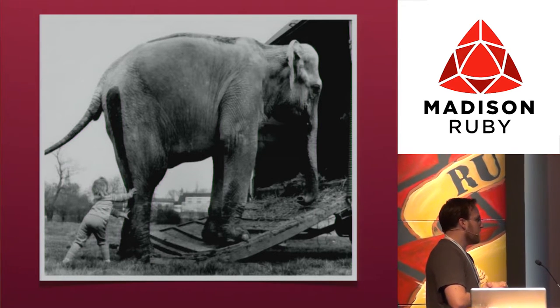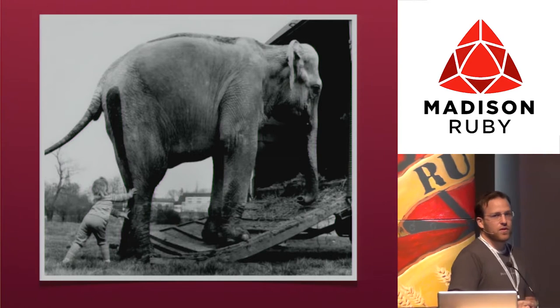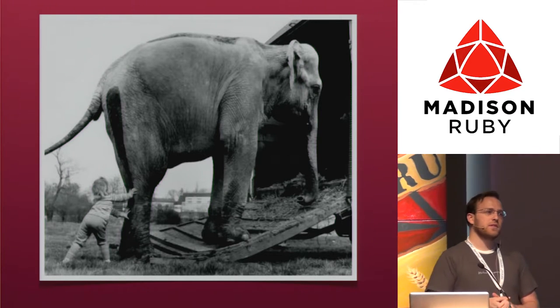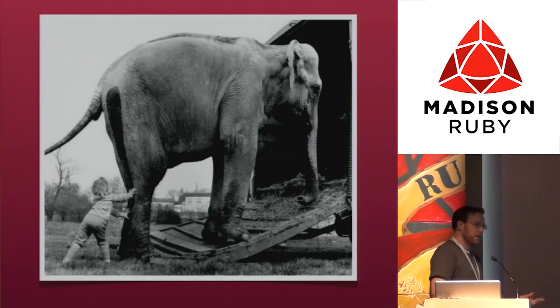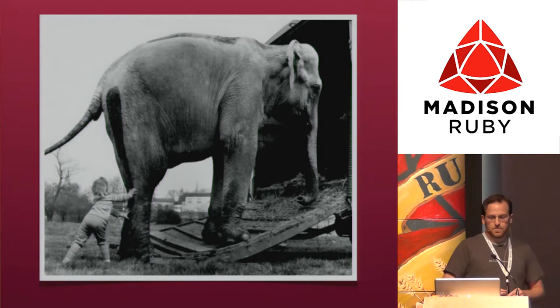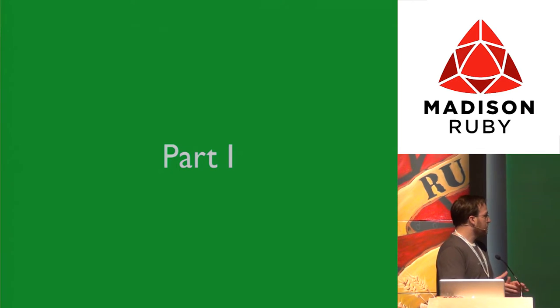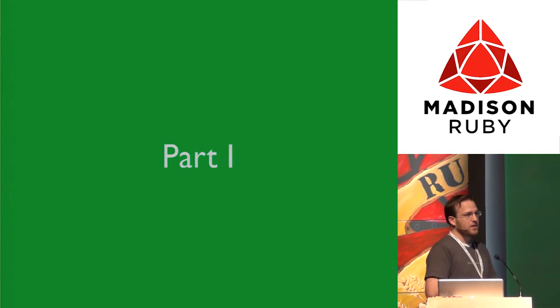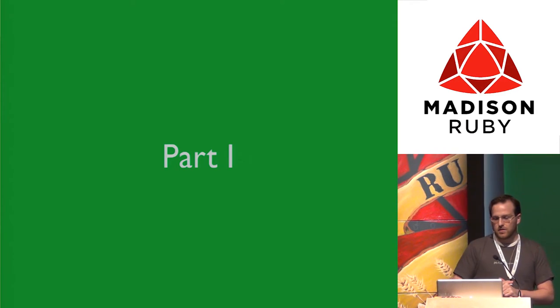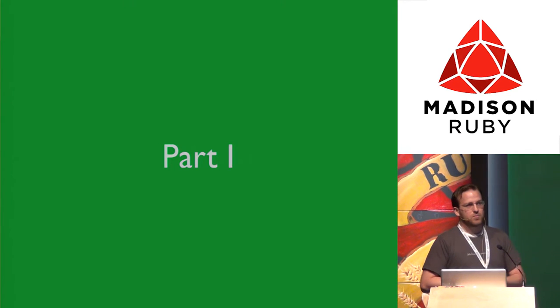At some point software is going to reach a size of complexity where we're not going to be able to push it around anymore. So part one of this talk is on sand piles and using that as a metaphor for how our elephant got so big.